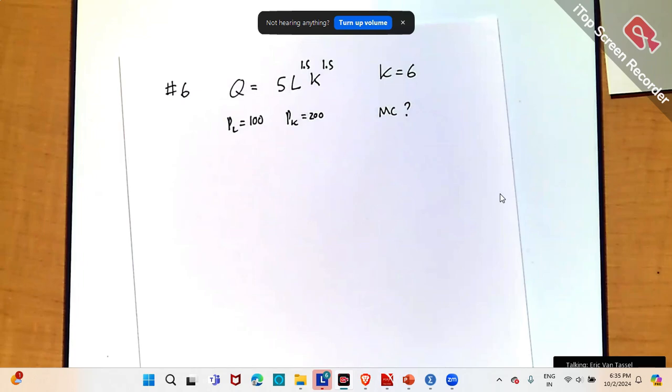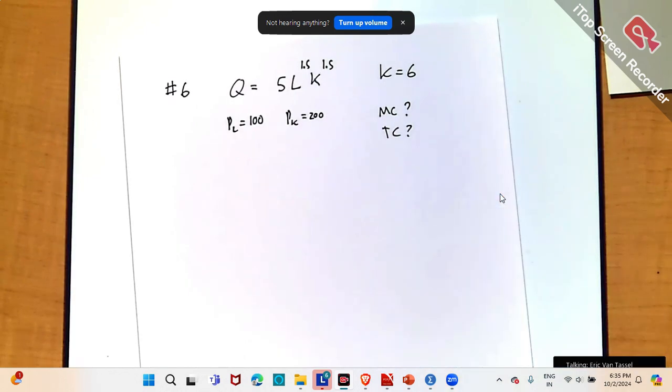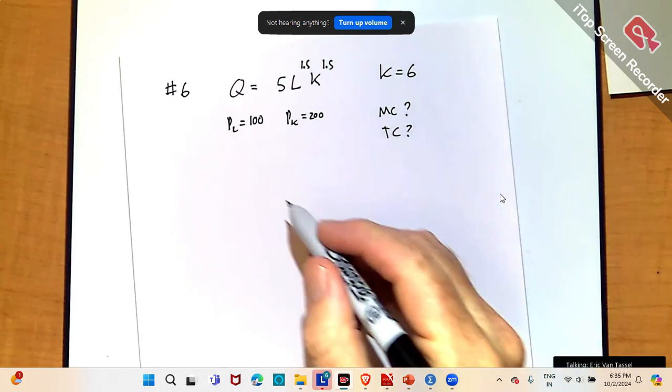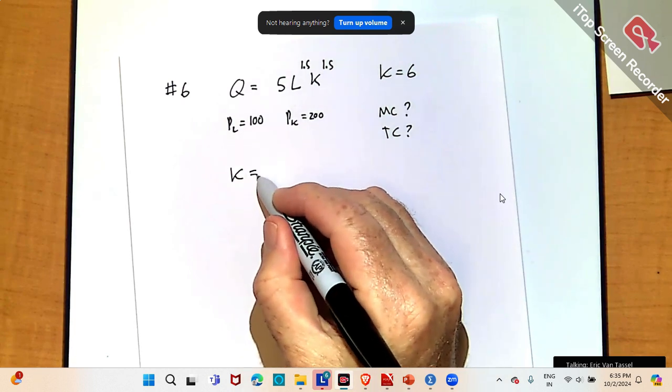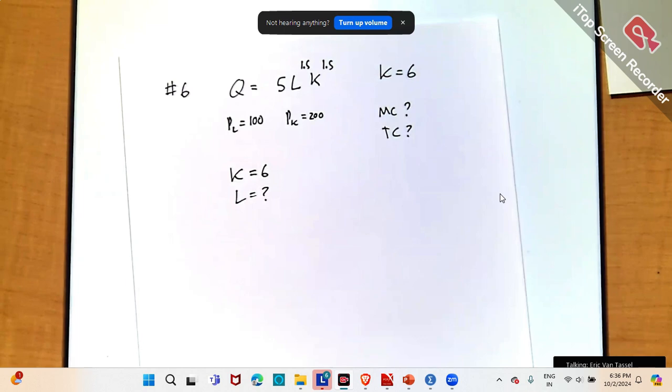So to get marginal cost, first you're going to need total cost. To get total cost, I'm going to need to know what my L and K are. I have K, right? That's 6. So I need my labor purchase. Once I have that, then I should be able to figure out what these things cost me.